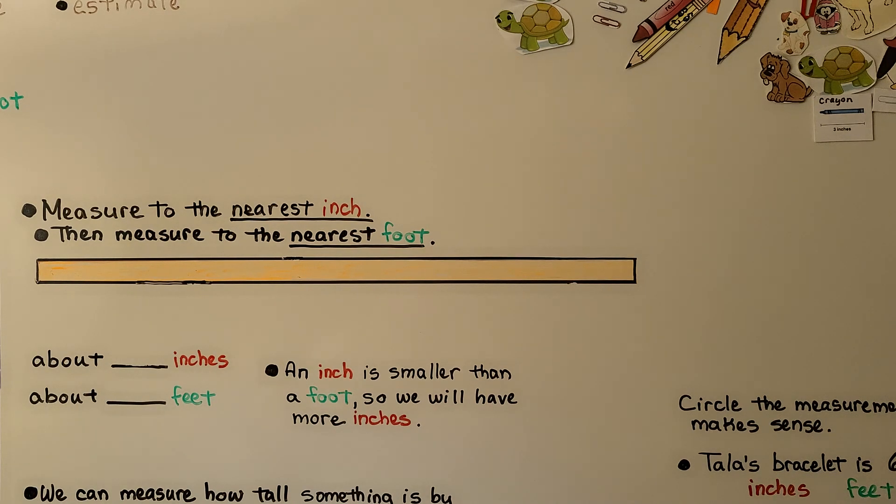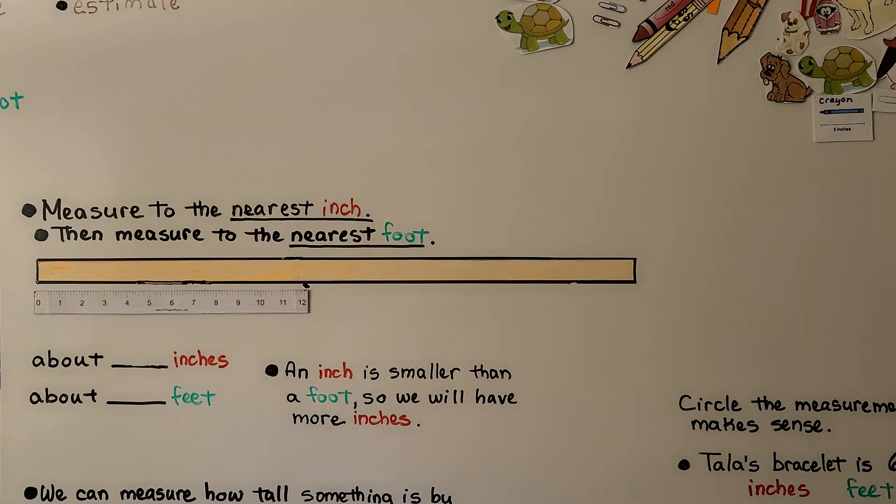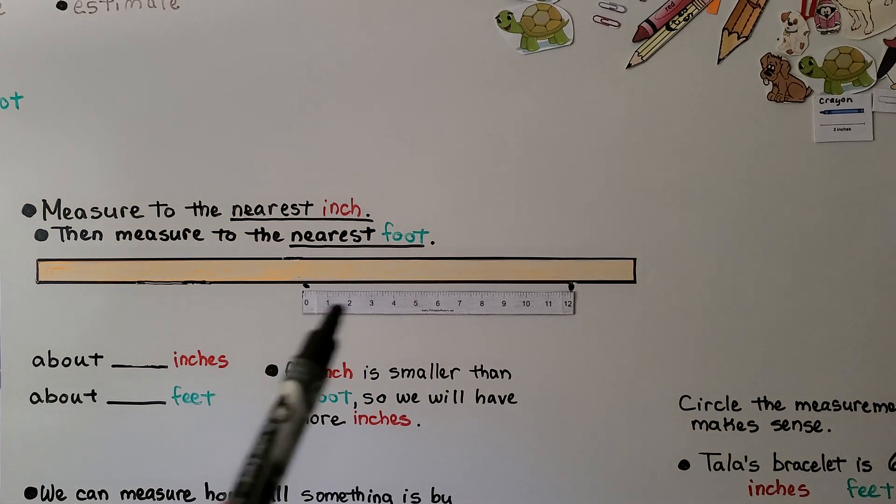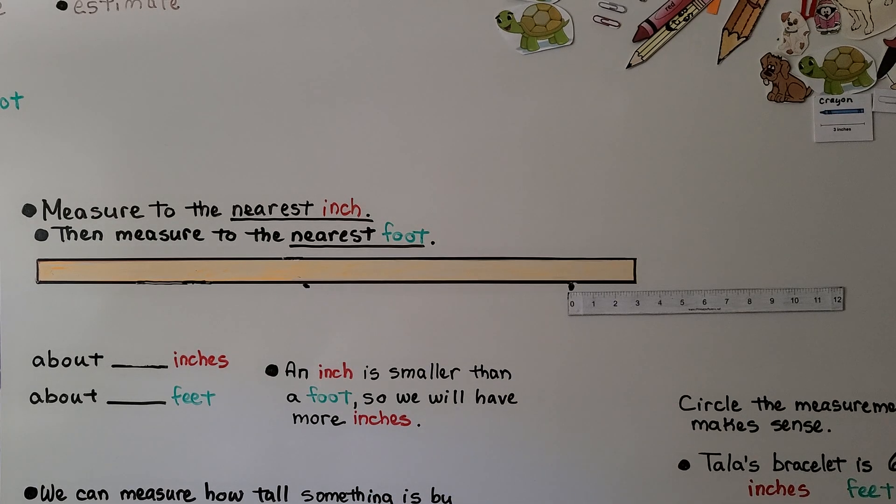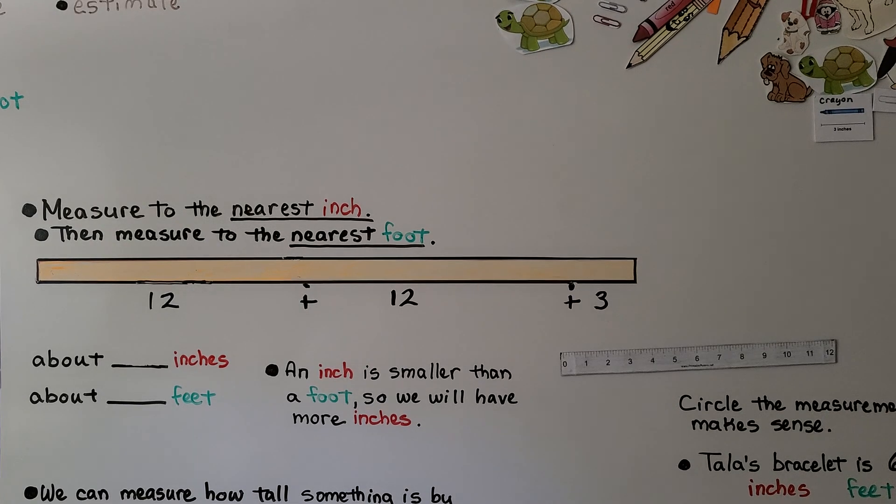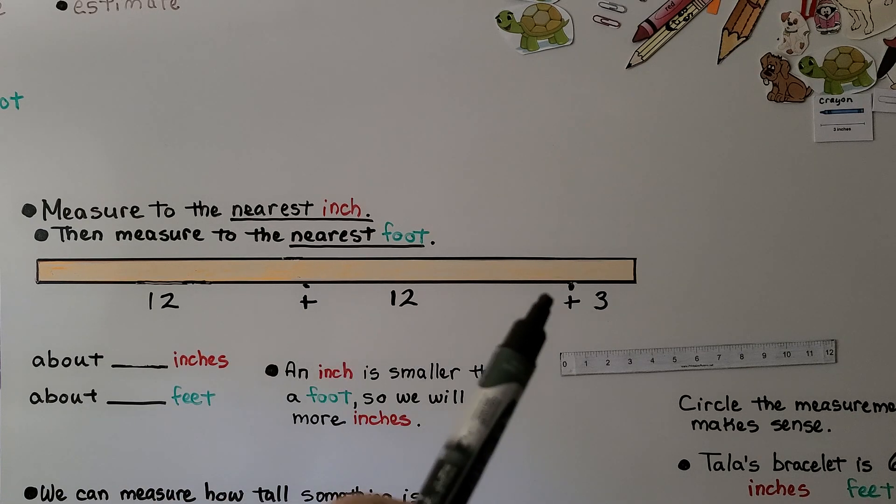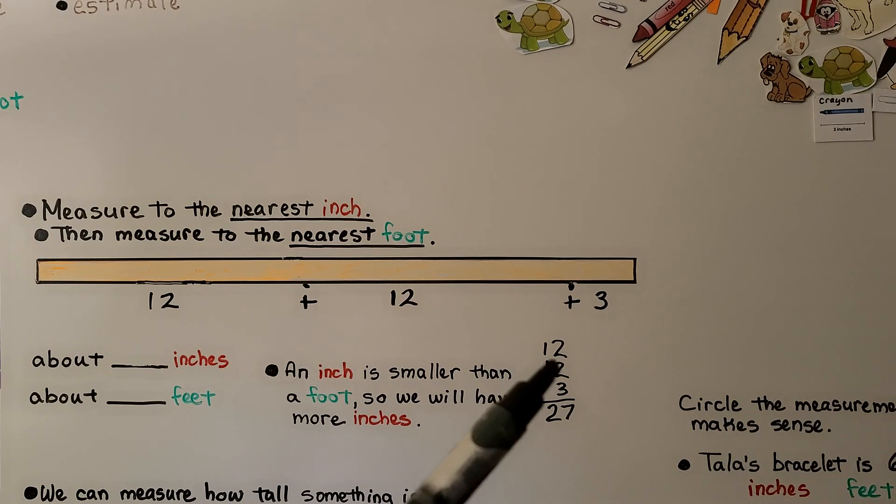We take our 12 inch ruler and line it up with zero at the left side. At the end of the ruler, we put a little mark - that's 12 inches. We slide the ruler over to the right and mark 12 inches again. Then we slide it over again and we have 3 inches. That means 12 inches plus 12 inches plus 3 inches. We add 12 plus 12 plus 3, which equals 27.